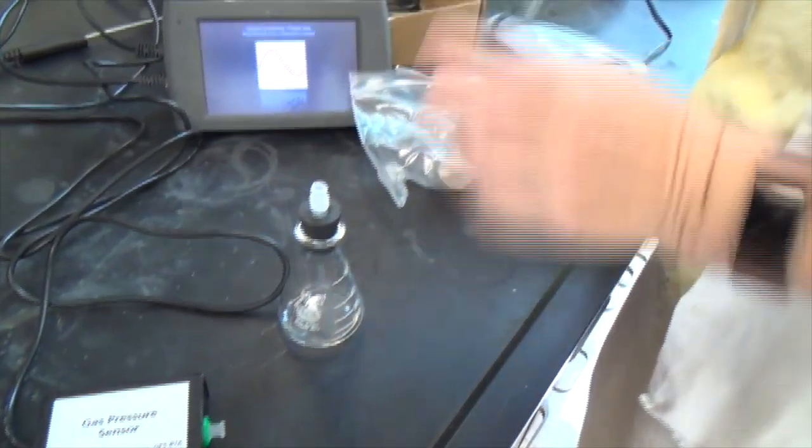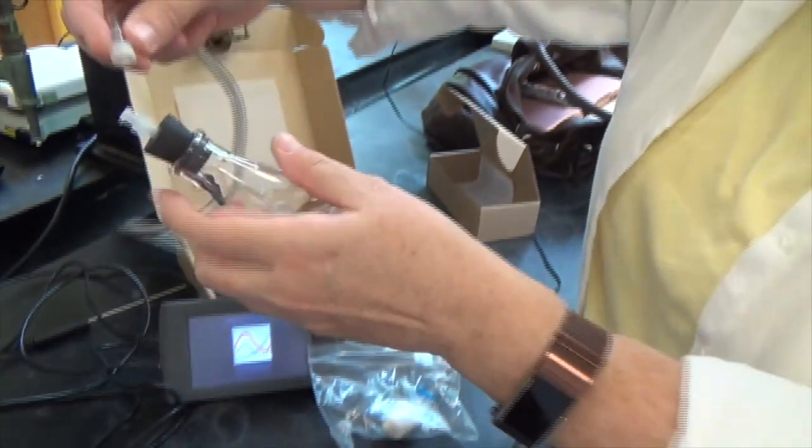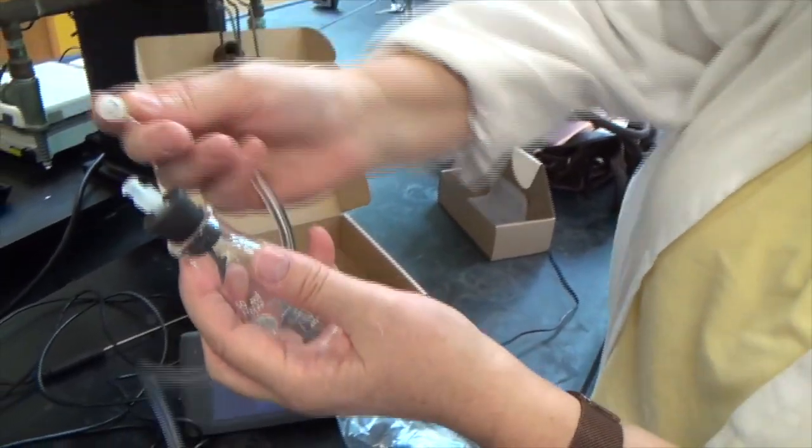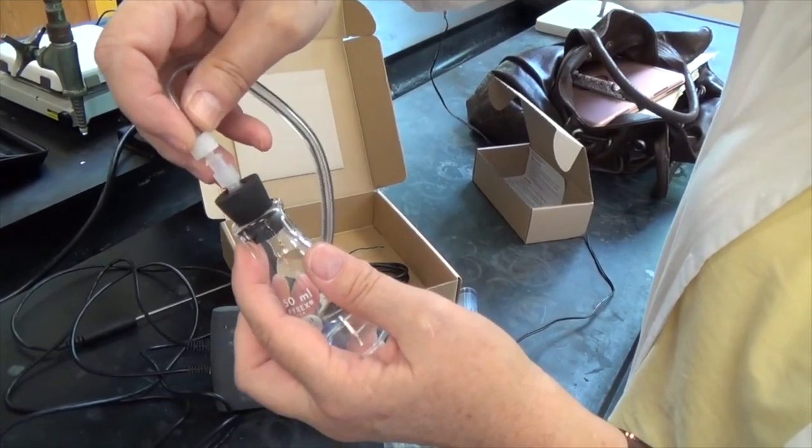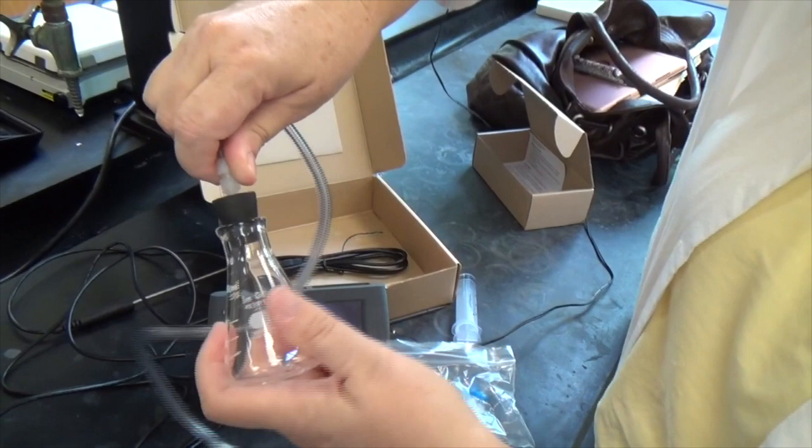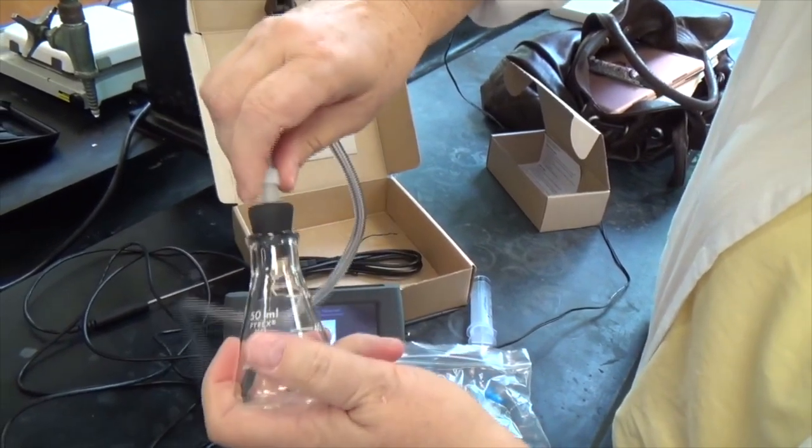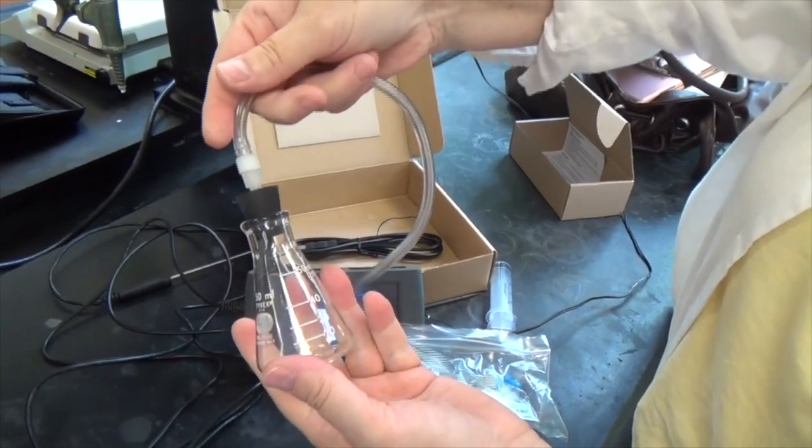This time instead of using the syringe we have a very small Erlenmeyer flask about 50 milliliters with a stopper and a lure lock connection. We're going to attach our lure lock from the gas pressure sensor to that stopper just like we did with the syringe. Again finger tight but not so tight that we warp the connection.